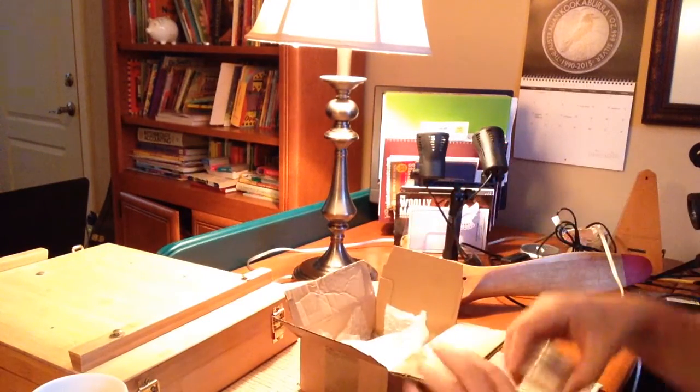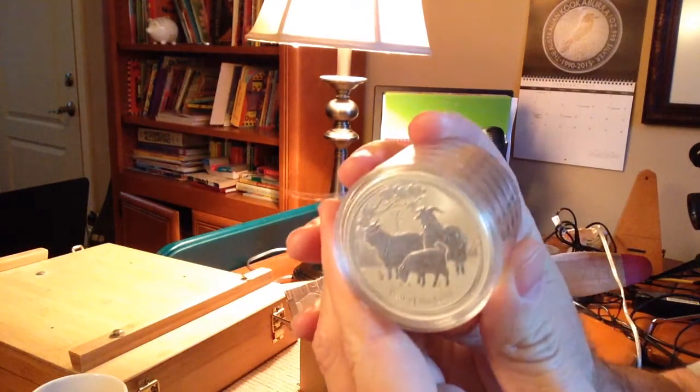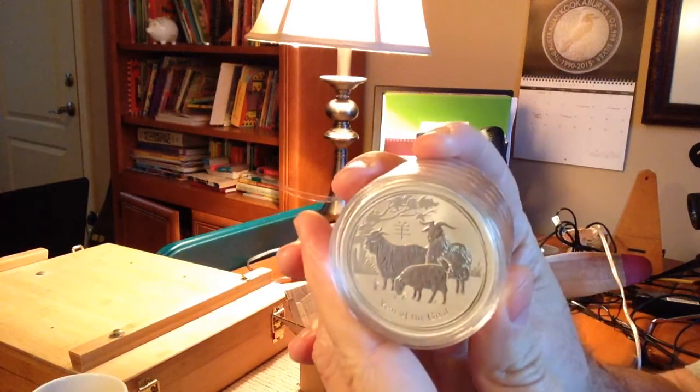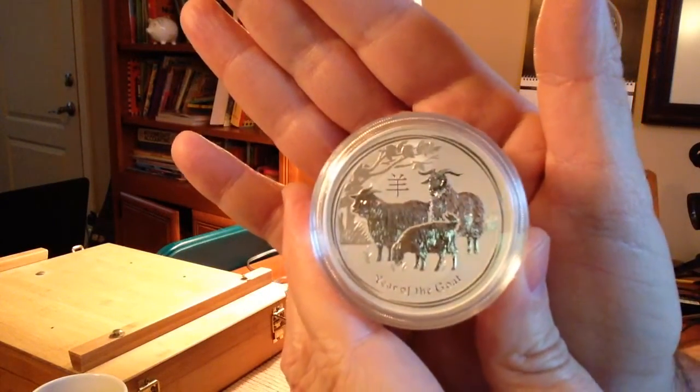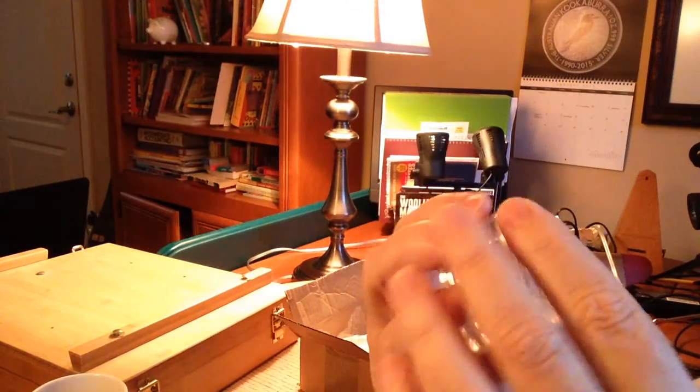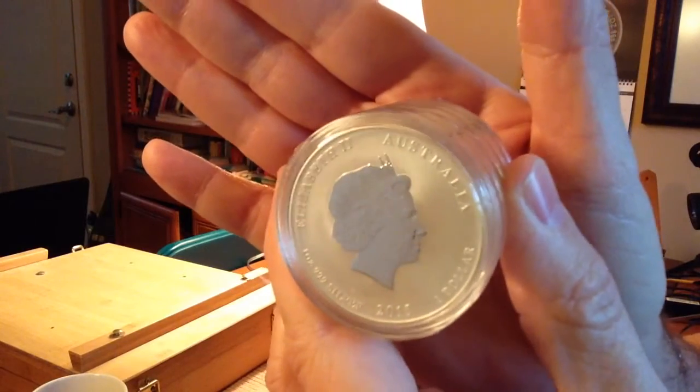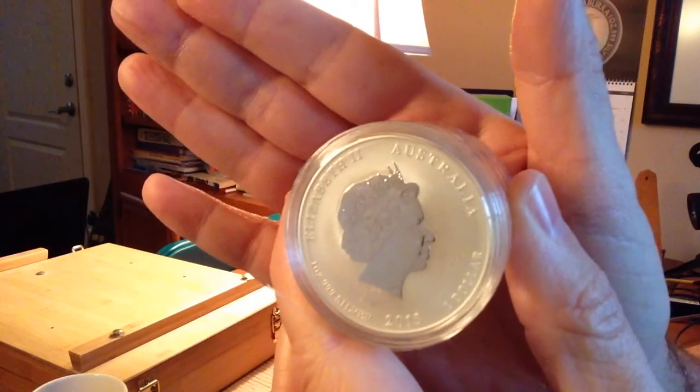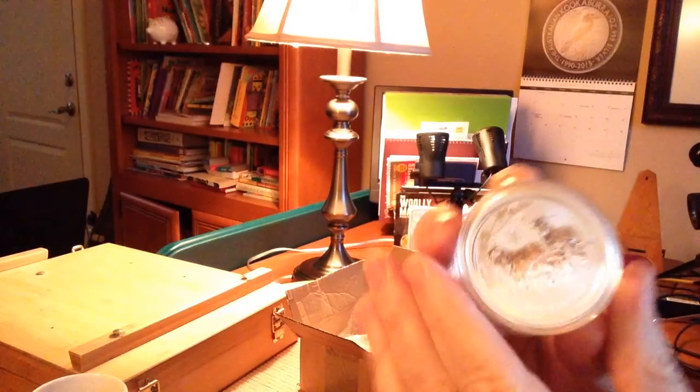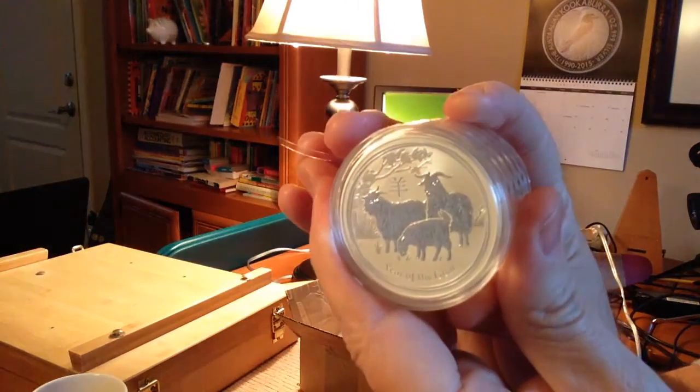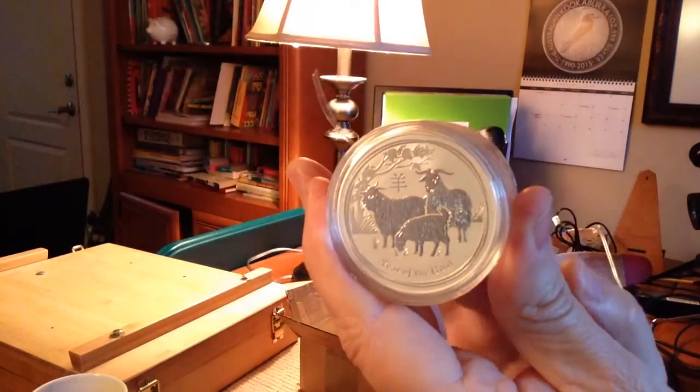The first part of the order that they actually flubbed was this roll of one ounce lunar goats, BU goats, and you've seen these a thousand times. These were supposed to be the lion privy, which they have for a little under 20 euros. I ordered five. I didn't want to get too greedy, but what they wound up sending me was the generic goats,